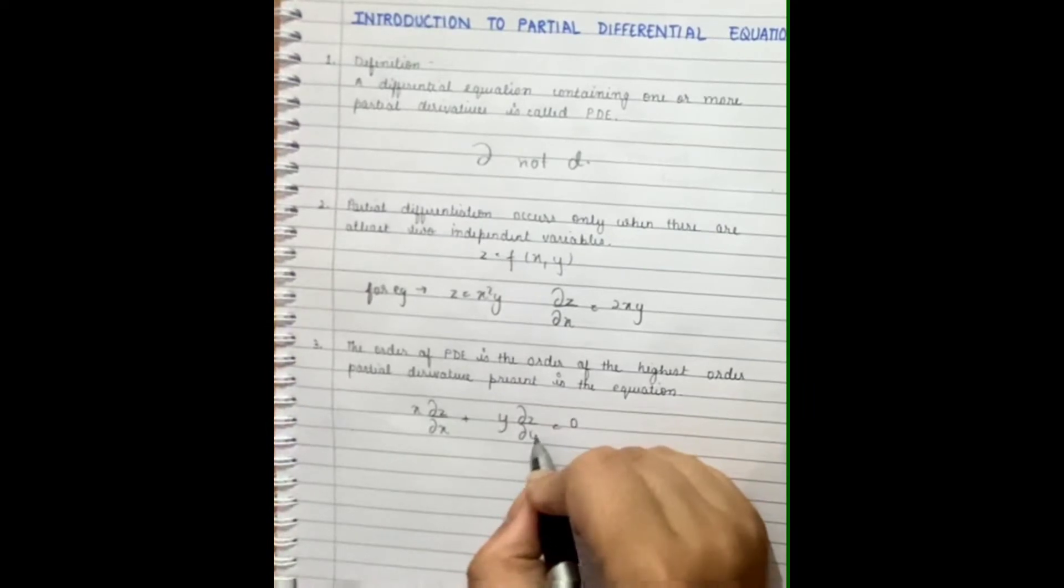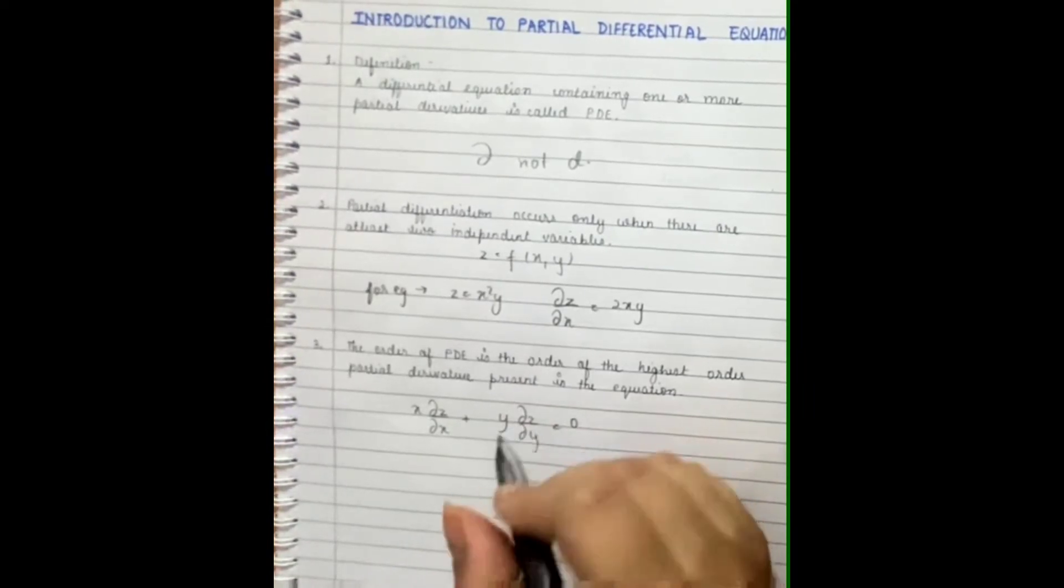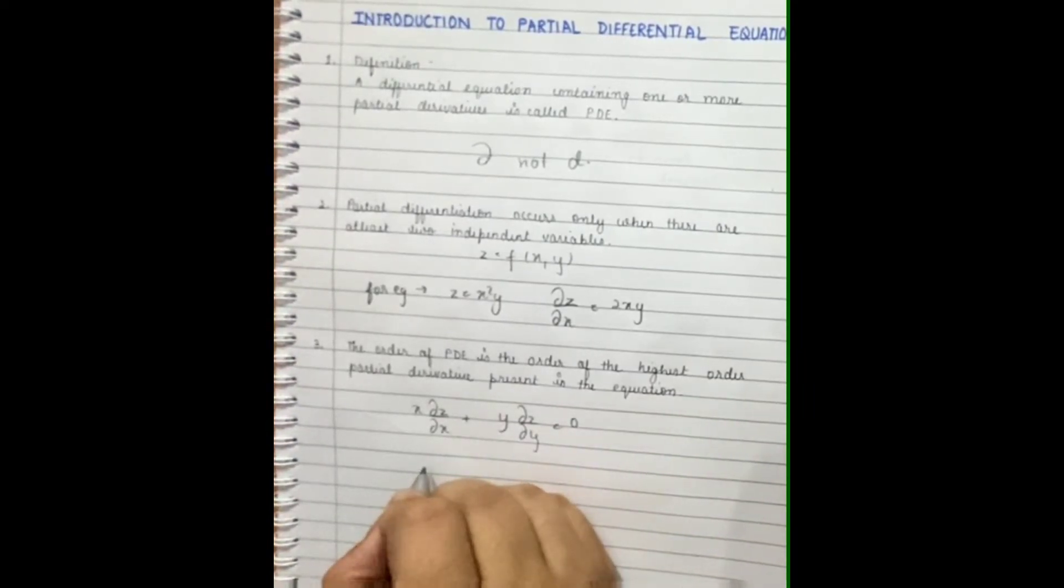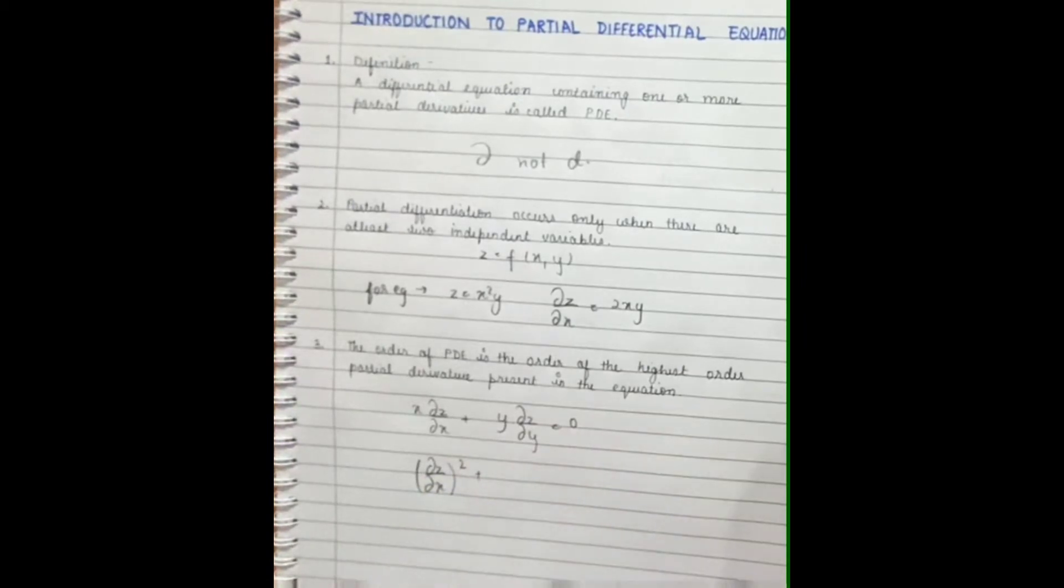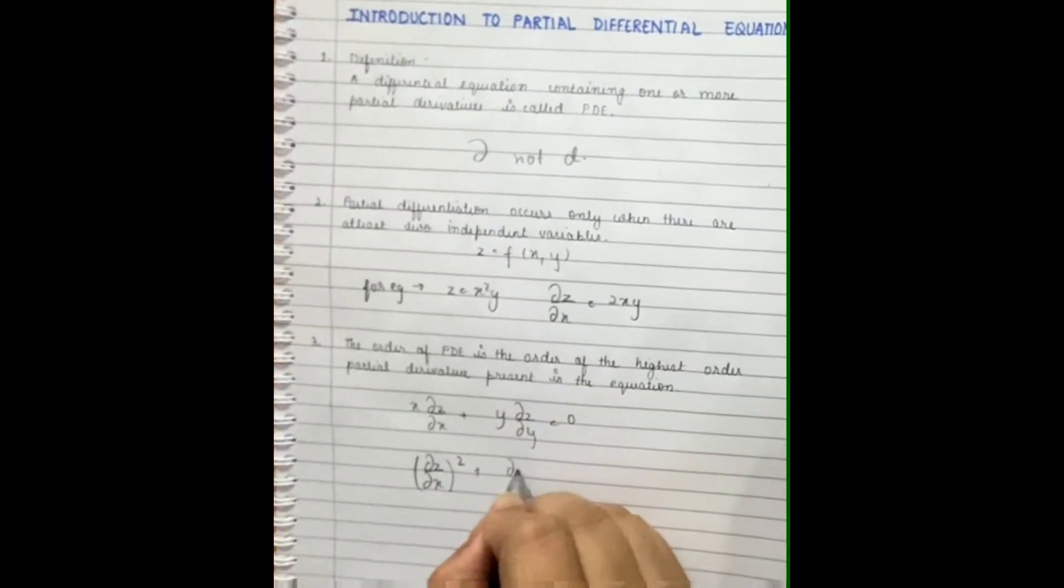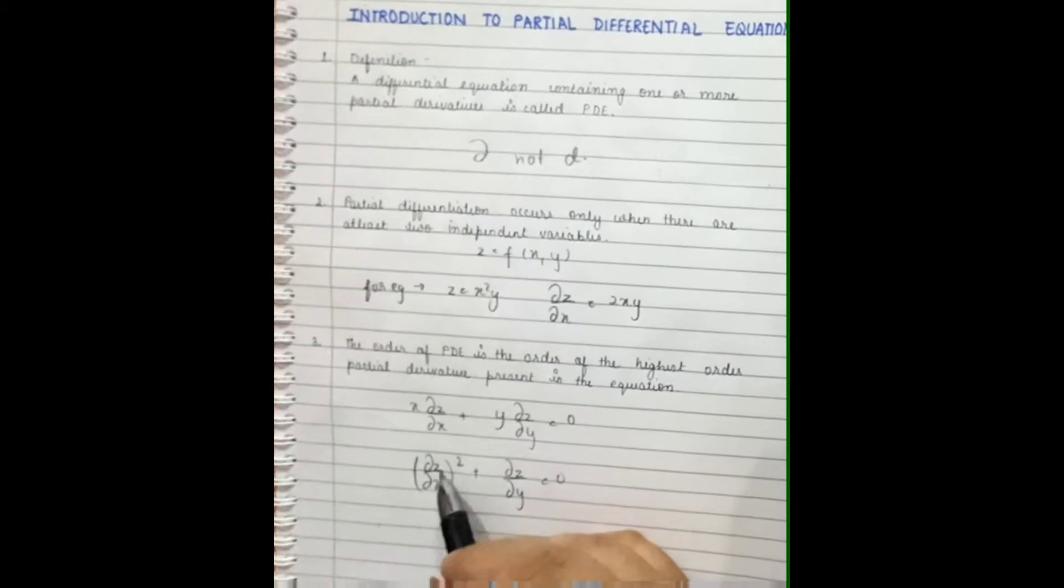Let's take another example. If Z is differentiated partially with respect to X and it's the whole square of that term, plus Z is partially differentiated with respect to Y again, the order of this equation is also one because it's differentiated only once and after that we are taking the square.